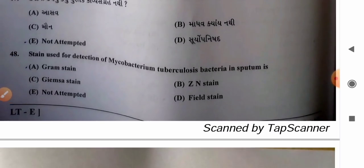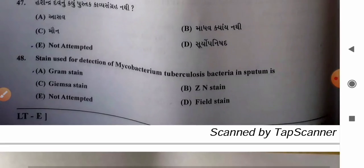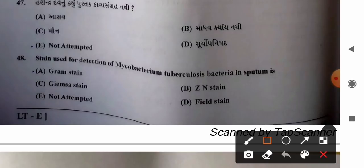Question 48: Stain used for detection of Mycobacterium tuberculosis in sputum — options: A) gram stain, B) Ziehl-Neelsen stain, C) Giemsa stain, D) field stain. The Ziehl-Neelsen stain (also called the acid-fast stain) is used for detection and staining of Mycobacterium tuberculosis in sputum. So option B is the correct answer.